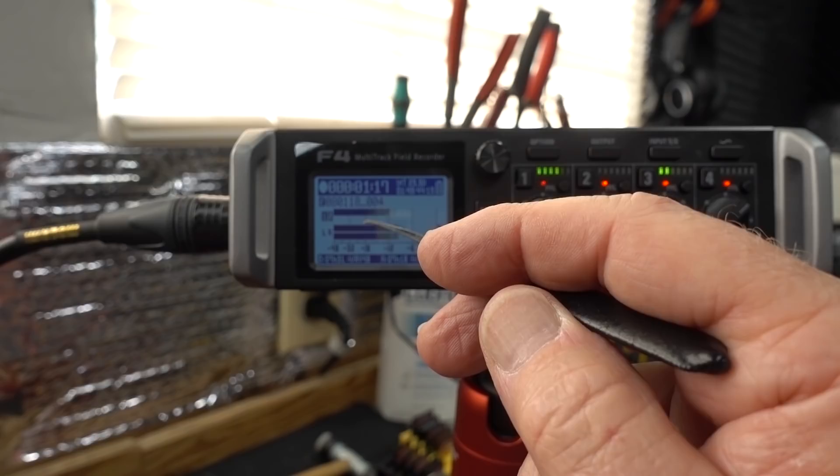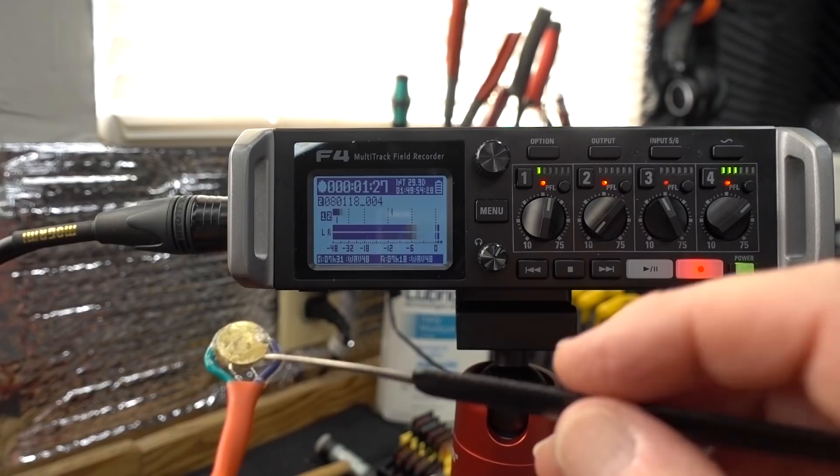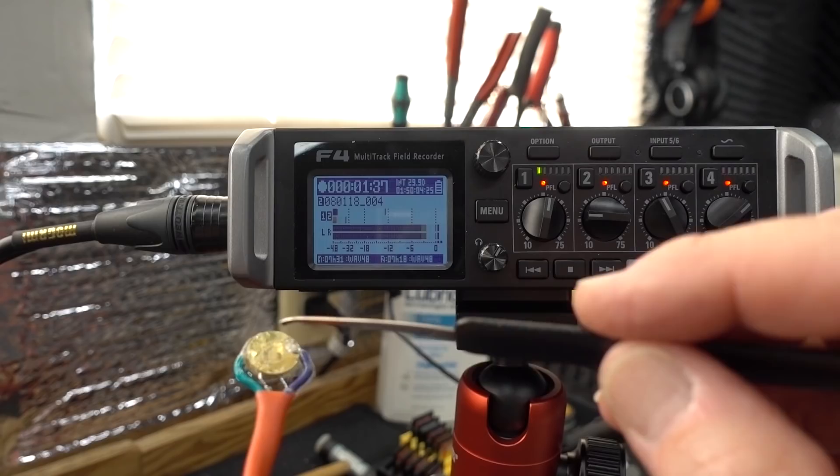I've got the gain turned down to 0 right now. So I'm going to slowly turn it up, and while I take this pick and tap it - see I'm already getting something when the gain's all the way down. Very slight there. Let's turn it up a little bit, and now it's really starting to come up there.